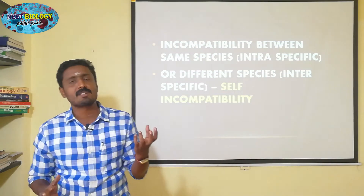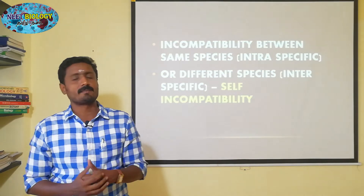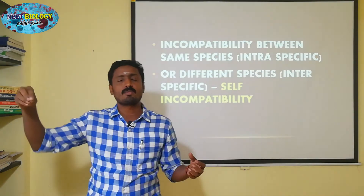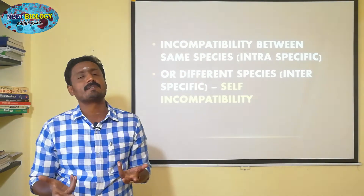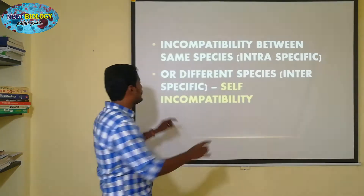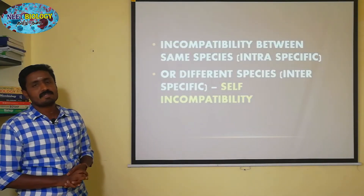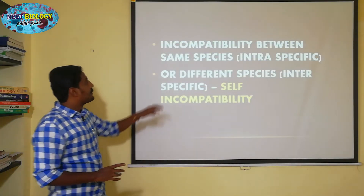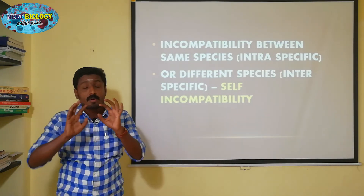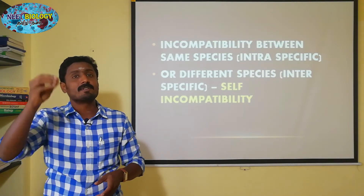For example, in one species there is a plant, in another species there is a fruit plant, and in another species there is a rice plant. If pollen from one lands on the stigma of the other, they are totally different species, so they are incompatible. This is interspecific incompatibility. Intraspecific incompatibility, on the other hand, is self-incompatibility.